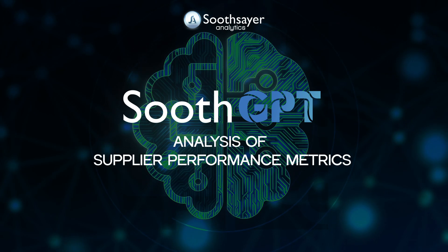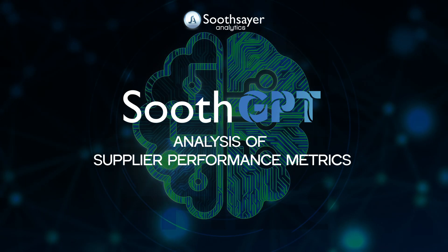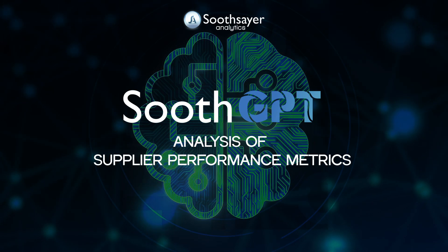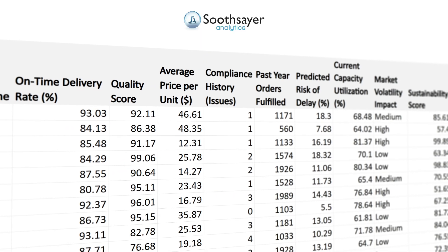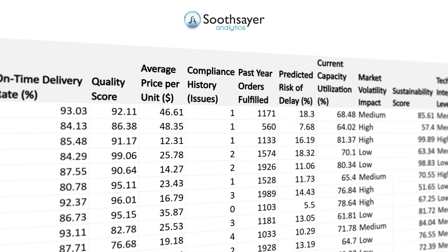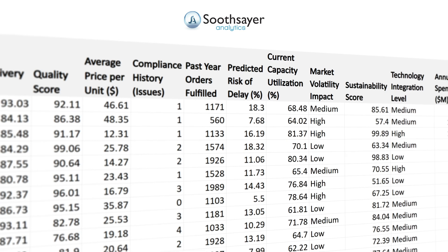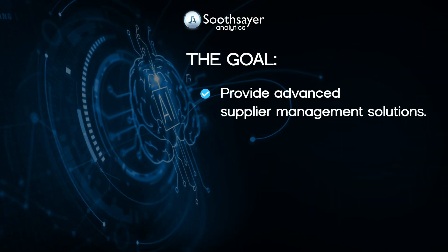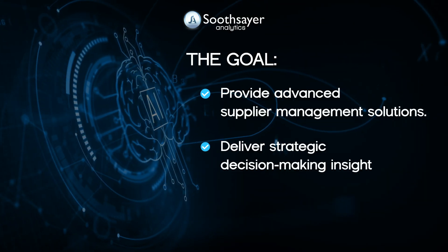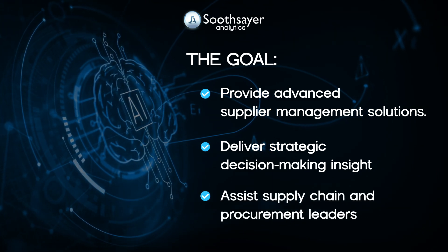In this demo, I will showcase how SootheGPT can analyze supplier performance metrics — such as on-time delivery rates, quality scores, pricing, compliance history, capacity utilization, and sustainability — to provide advanced supplier management and strategic decision-making insights for supply chain and procurement leaders.